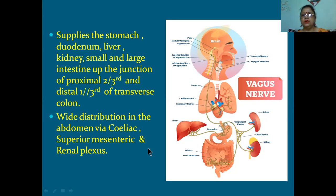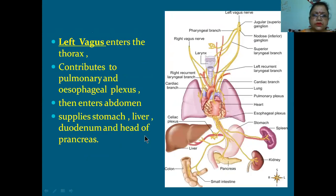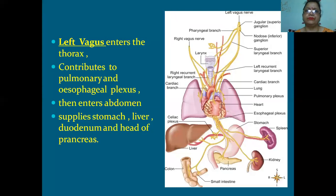Right vagus and left vagus are almost the same. Both enter the thorax, contribute to pulmonary and esophageal plexus, then enter the abdomen through the esophageal opening and supply stomach, liver, duodenum, and head of the pancreas. When the gut is developing - stomach, duodenum, small intestine, large intestine - they carry the vagus nerve along.